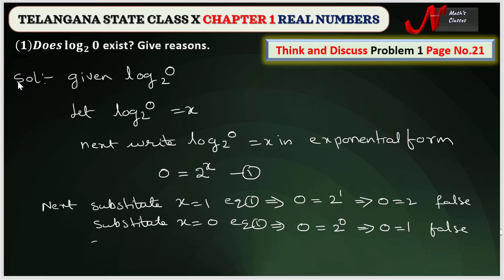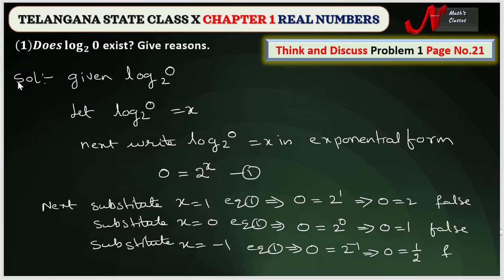If we take any other value, say x equal to minus one, equation one implies zero equal to two power minus one, which equals one-half. This is also false since zero is not equal to one-half. From the above discussion, we can say that log zero with base two does not exist.